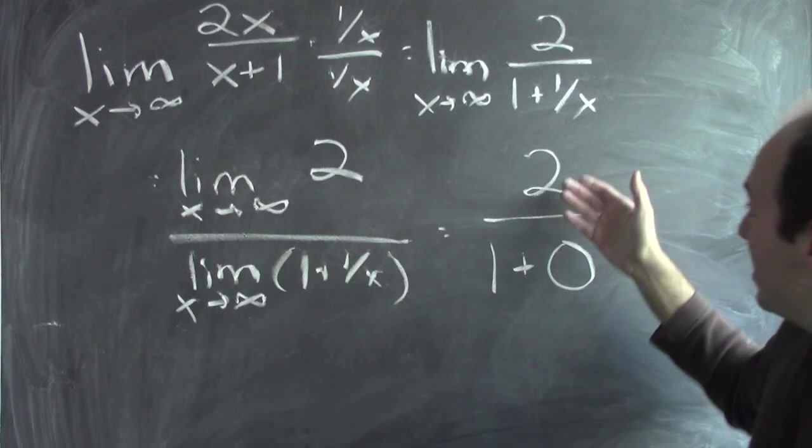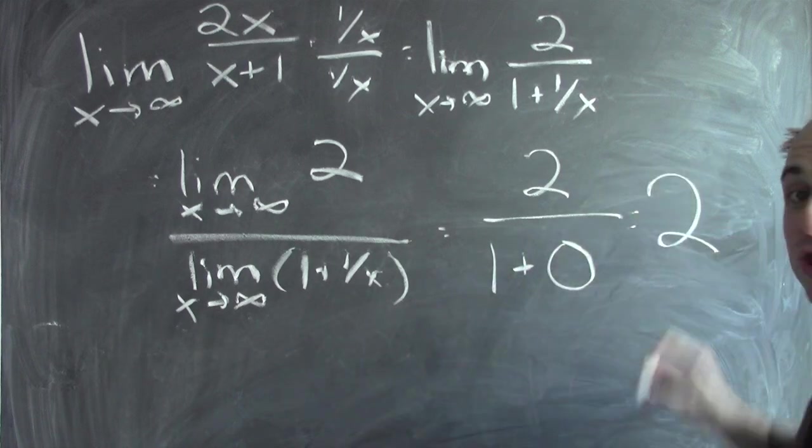That means my original limit is 2 over 1 plus 0, which is 2.